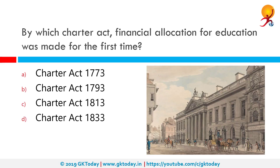By which Charter Act was financial allocation for education made for the first time? The correct answer is the Charter Act of 1813. The East India Company Act of 1813, also known as the Charter Act 1813, was an act of the Parliament of the United Kingdom which renewed the charter issued to the British East India Company and continued the company's rule in India. However, the company's commercial monopoly was ended except for the tea and opium trade and the trade with China, reflecting the growth of the British Crown's power in India.